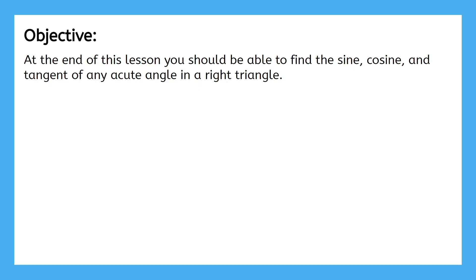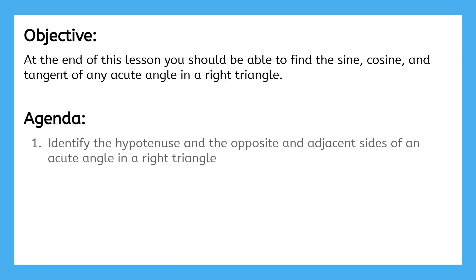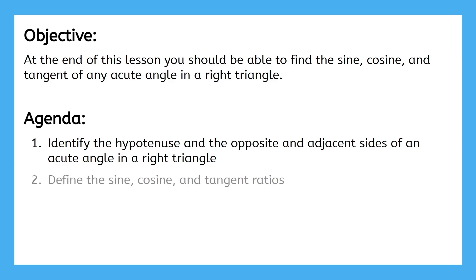At the end of this lesson, you should be able to find the sine, cosine, and tangent of any acute angle in a right triangle. Our agenda for today is to identify the hypotenuse and the opposite and adjacent sides of an acute angle in a right triangle. We will also define sine, cosine, and tangent ratios, and we will complete a practice problem.